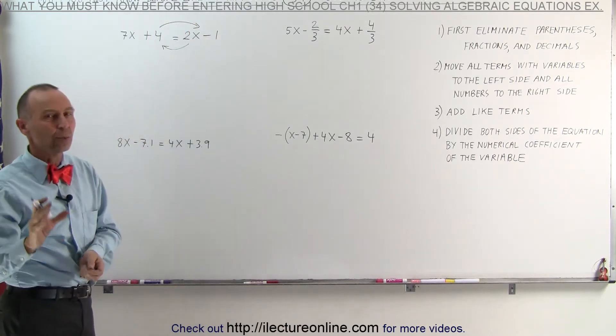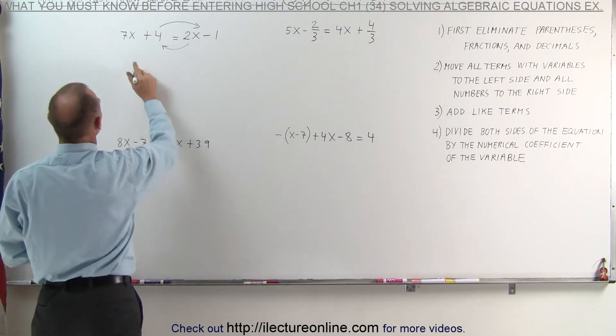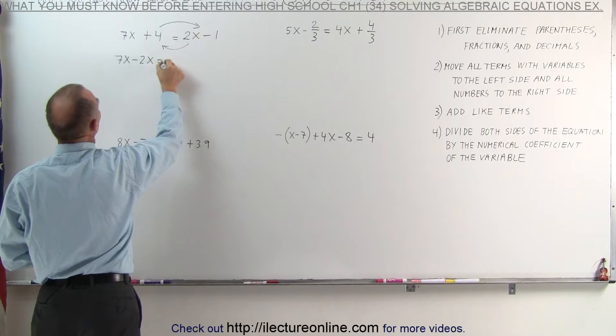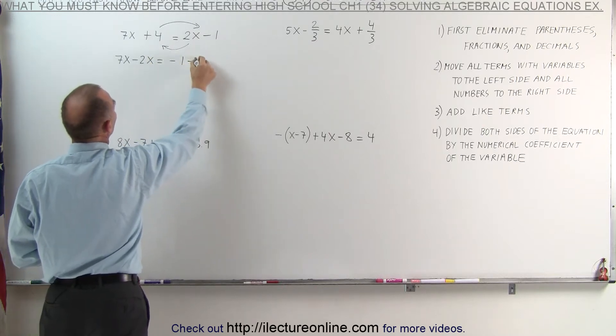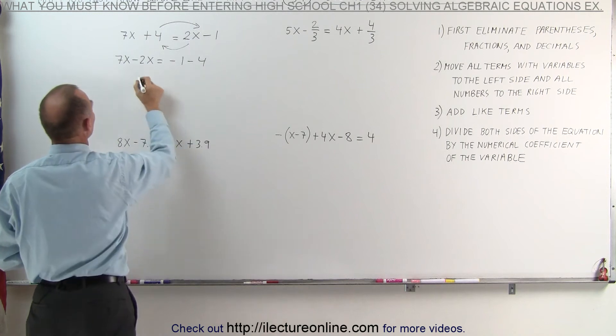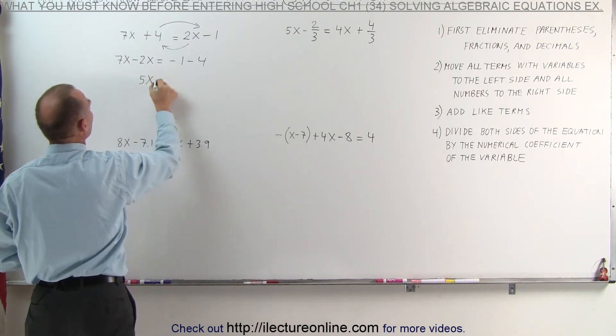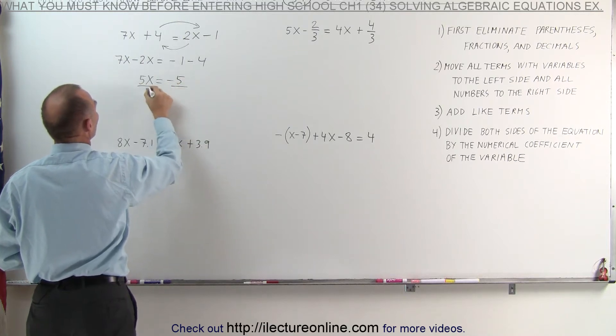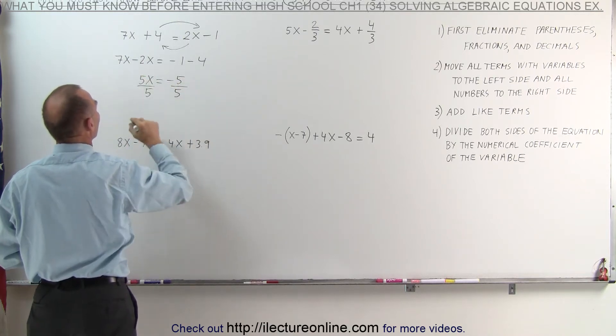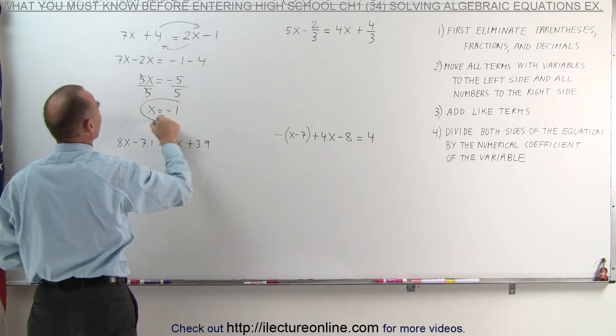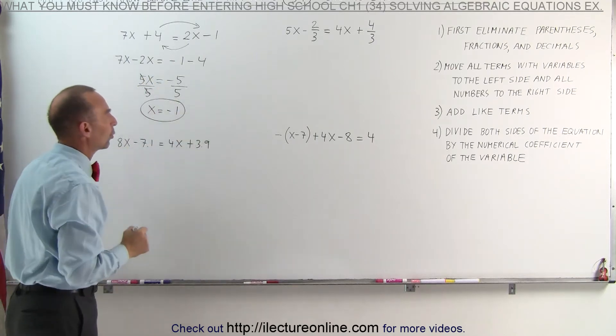Again, when we cross the equal sign, we change the sign. This then becomes 7x minus 2x equals minus 1 minus 4. Combining like terms, step number three, 7x minus 2x is 5x equals minus 1 minus 4, which is minus 5. Then we divide both sides of the equation by the numerical coefficient of the variable, and we get x equals minus 1, which is the solution to our first equation.